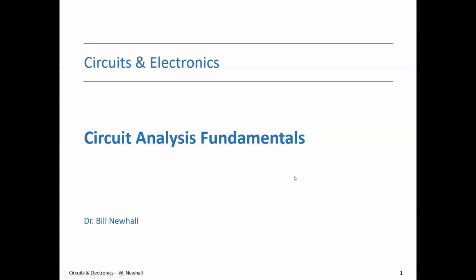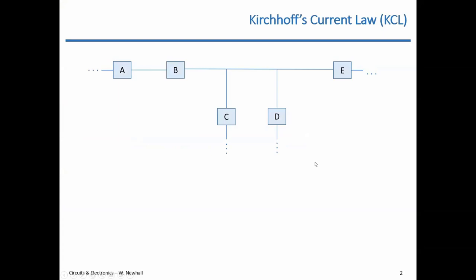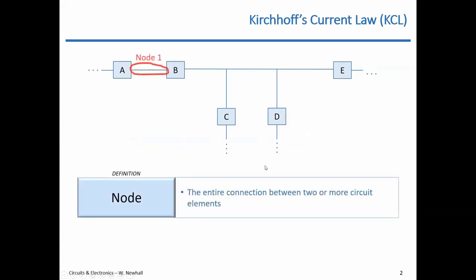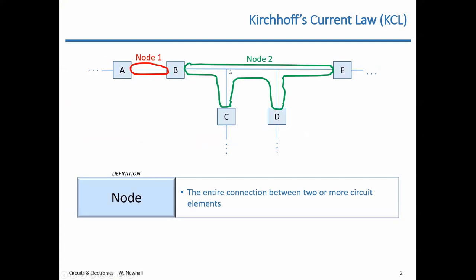Let's talk about Kirchhoff's laws — Kirchhoff's current law, Kirchhoff's voltage law — and also series and parallel circuit elements. Kirchhoff's current law: here's a circuit with several circuit elements and connections. A node is the entire connection between circuit elements. I have two nodes circled here — node one in red, node two in green. When working KCL problems, consider the node as that entire connection, not just the junction between two of the wires of that node.